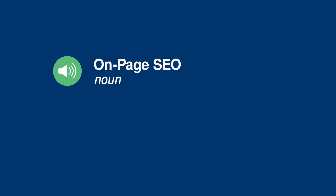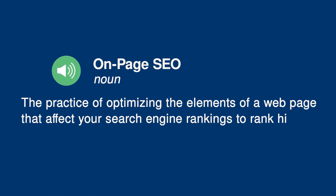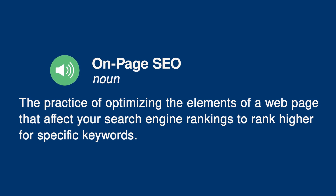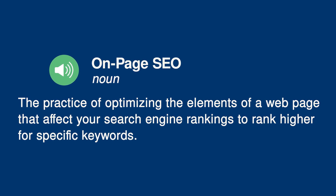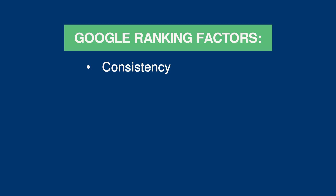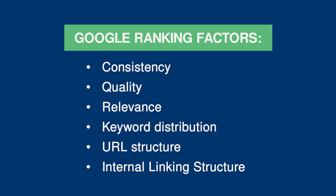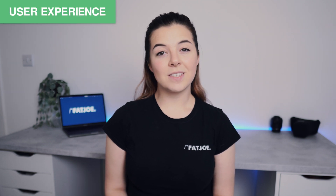On-page SEO is the practice of optimising the elements of a webpage that affect your search engine rankings to rank higher for specific keywords. There are a number of ranking factors that Google considers when ranking websites. This includes the consistency and quality of the content, the topical relevance of the content, keyword distribution, the URL and internal linking structure, among many others. I'll go through how to optimise all these elements in this video, but first we need to talk about user experience.